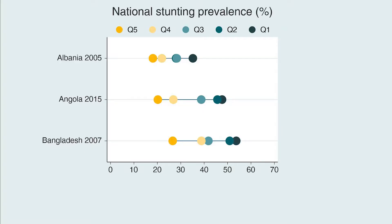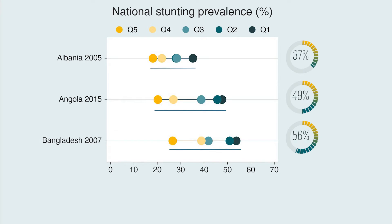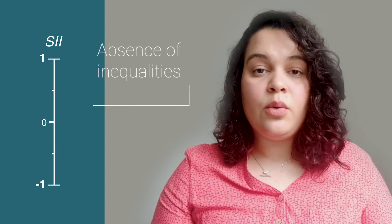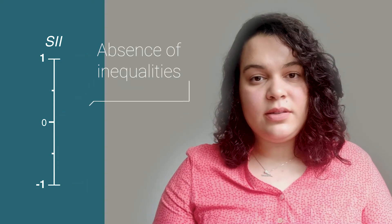One alternative for calculating a measure of absolute inequality that takes all groups into account is calculating the slope index of inequalities. The SII is a measure of absolute inequality, which measures the difference between the predicted values at both endpoints of the distribution. The slope index of inequalities varies between minus 1 and plus 1, where 0 represents the absence of inequalities.